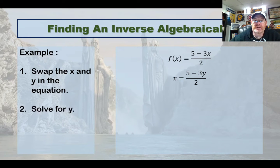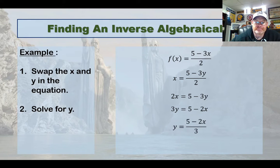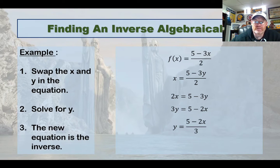Step 2, solve the equation for y. So you're just doing run-of-the-mill algebra to get the equation so that it looks like y equals. So I would multiply by 2 first. Since I have a negative 3y, I'm going to bring the negative 3y to the other side and bring the 2x over. So it looks like this. And then I would divide everything by 3. And lo and behold, that is the equation of the inverse.